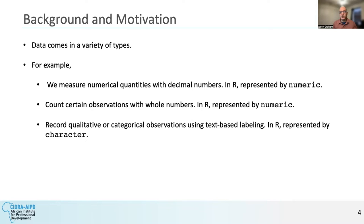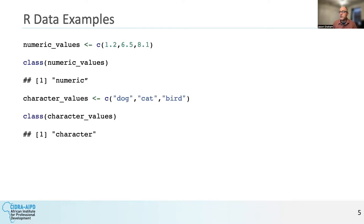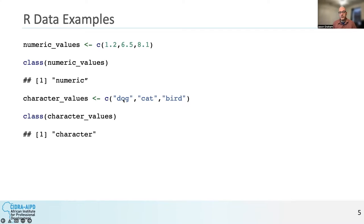There are also categorical variables — classifications like recording the color of different vehicles: white, black, blue. These are represented in R using characters. For example, I create a vector called numeric_values with 1.2, 6.5, and 8.1; calling class() on it returns numeric. Alternatively, a character vector containing dog, cat, and bird returns character as expected.